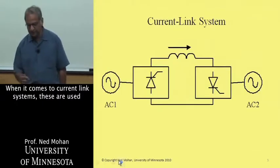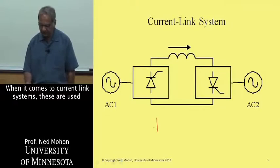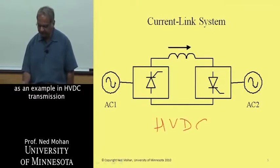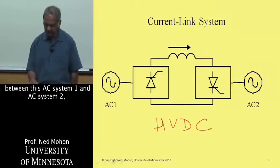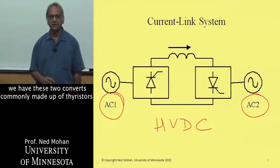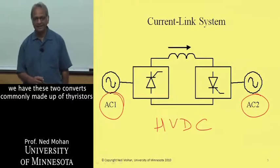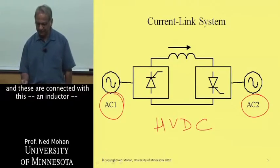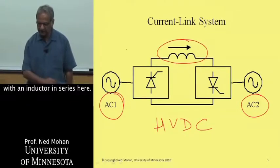When it comes to current link systems, these are used as an example in HVDC transmission. Between this AC system one and AC system two, we have these two converters, commonly made up of thyristors, and these are connected with an inductor in series here.